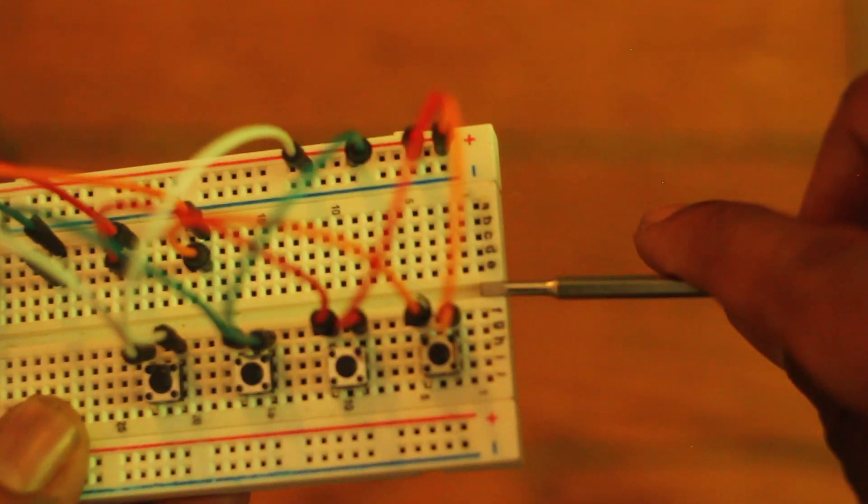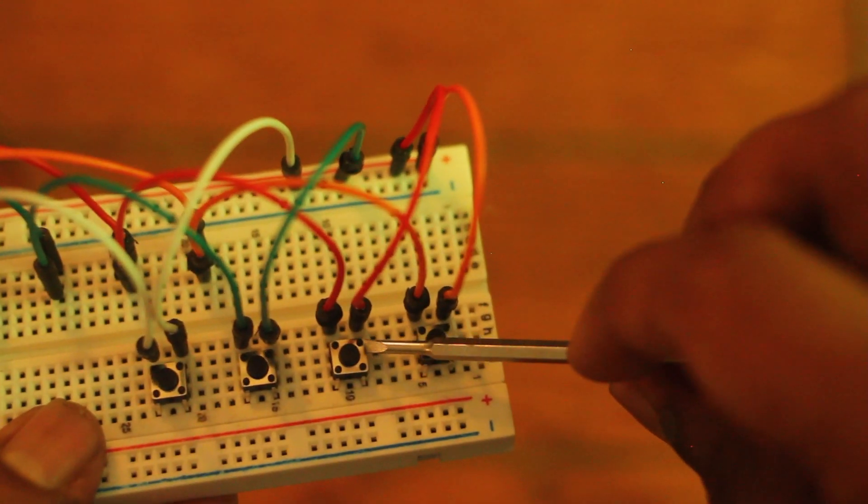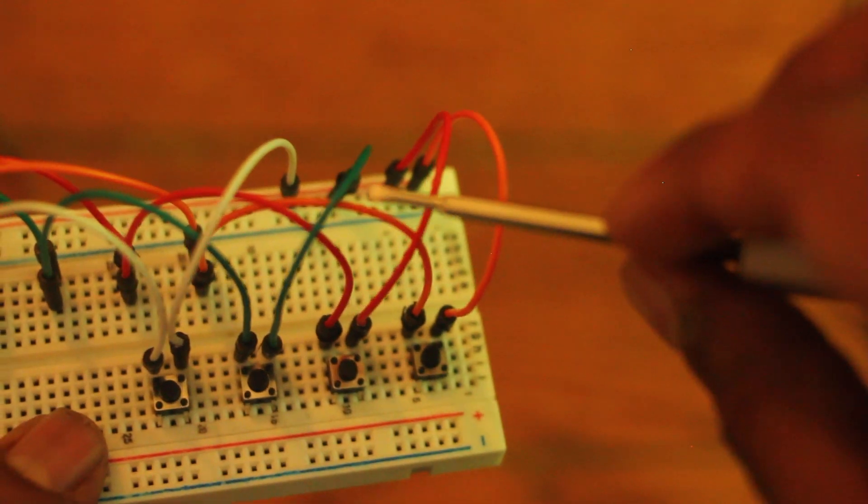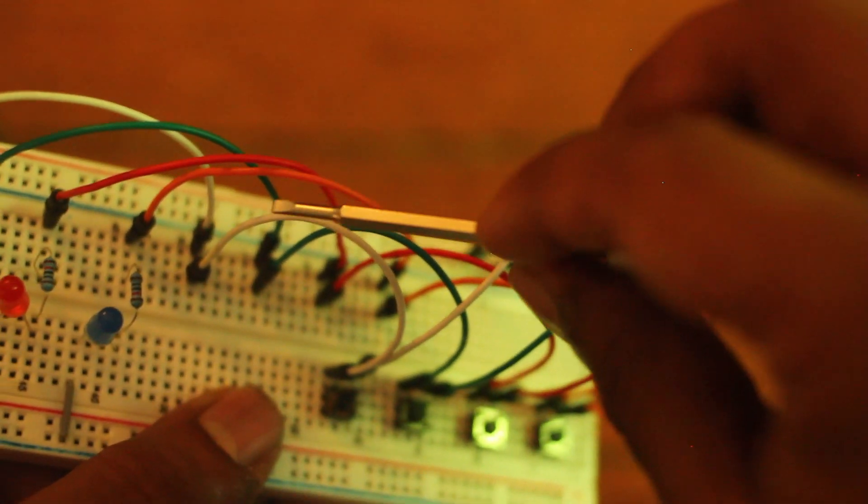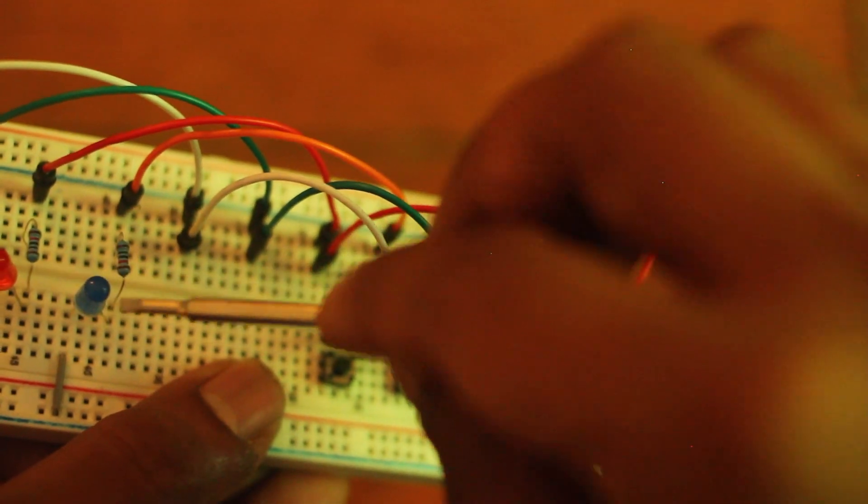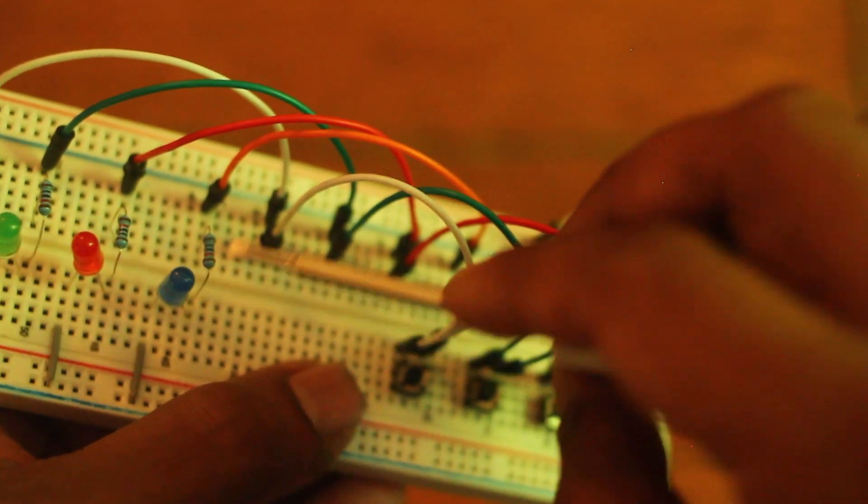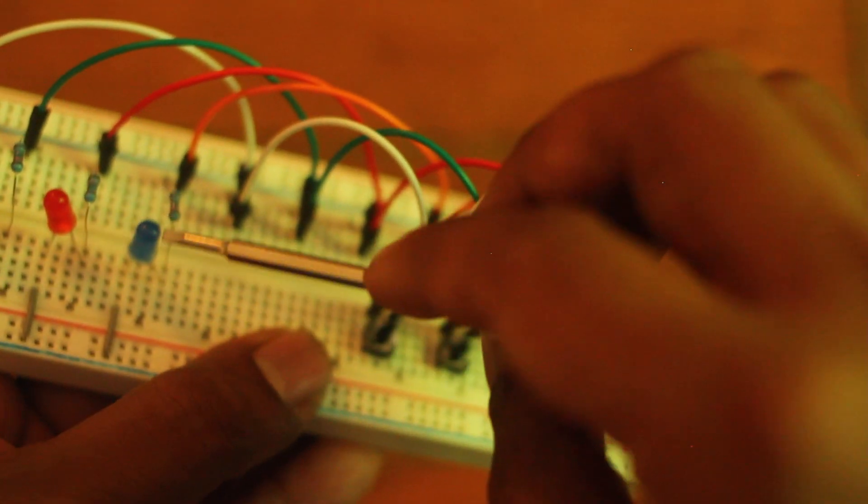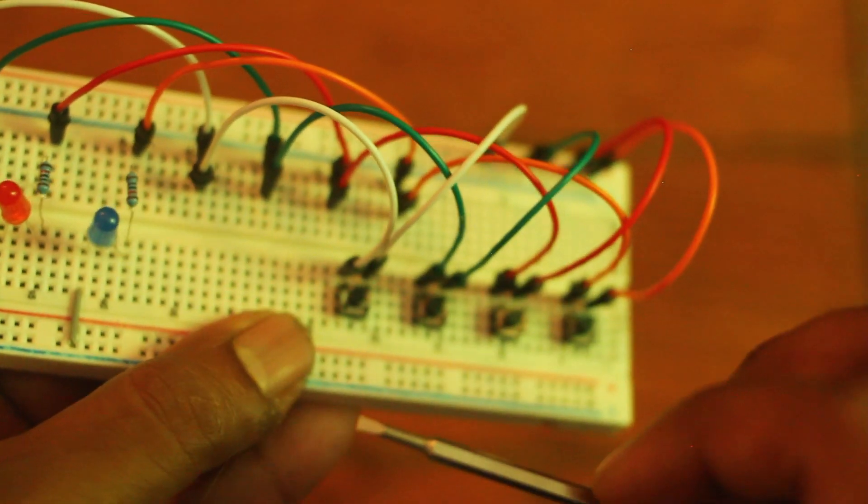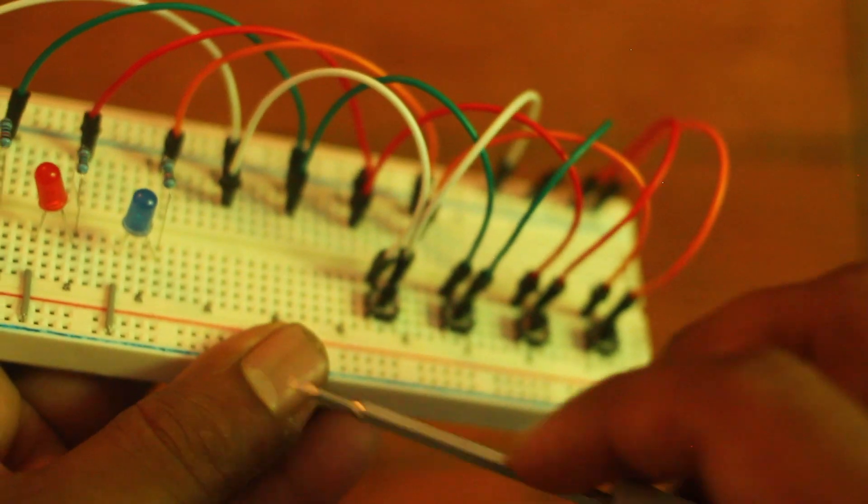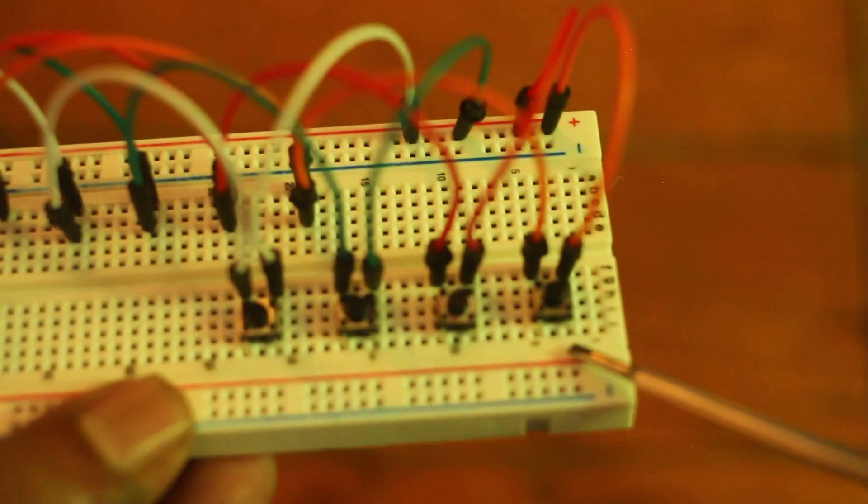And then I jump over here and this is where again I feel like it could be more efficient. And then it hits this LED over here, then it goes through the resistor, goes to the LED, and returns back to the negative rail. I pretty much repeat that process four times.